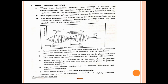Next is the beat phenomenon. When two harmonic motions pass through a certain point simultaneously, the resultant displacement at that point is the vectorial sum of the displacements of the two harmonic motions. The superposition of two harmonic motions is known as interference. The beat phenomenon occurs due to interference between two waves of slightly different frequencies moving along the same straight line in the same direction.